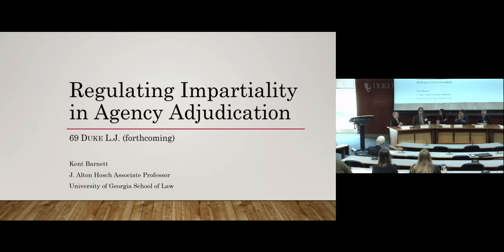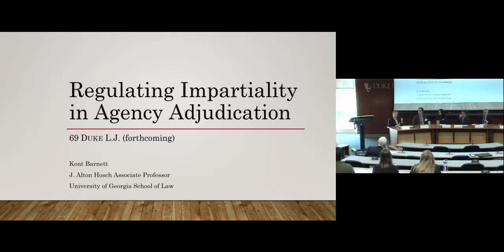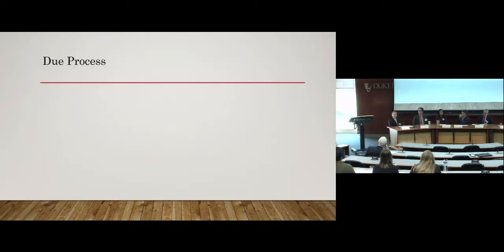The name of my project is Regulating Impartiality in Agency Adjudication. The thesis is quite simple: agencies and the executive branch can use what I call impartiality regulations to mitigate or moot a competing constitutional clash between the Due Process Clause and Article II that Supreme Court precedent has created and that's working its way through legal challenges in the lower courts. The question is how the executive branch can help resolve, or at least mitigate, concerns arising over the protection from at-will removal that administrative law judges currently have.